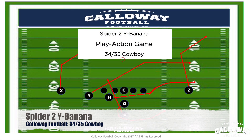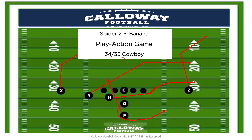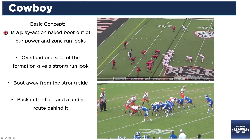Spider two wide banana — you got to love Coach Gruden. The spider two wide banana concept that Coach Gruden's always talking about is our cowboy concept in the Callaway football world. It's part of our play action game. We like to run it out of what we call 34 or 35 cowboy. Our basic concept is a play action naked boot out of our power look or our zone run looks.